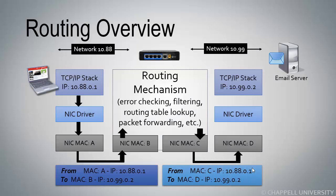Once the packet travels out from the router's second network interface card, we can see that the MAC address information of the packet has changed — and this is really important to understand. When traffic travels through a router, the MAC address information will always change. If it doesn't change, then your router is acting as a switch, and some routers with Layer 2 functionality may do that. Any time we see the MAC address change when going through a router, we know it has been forwarded based on Layer 3 information.